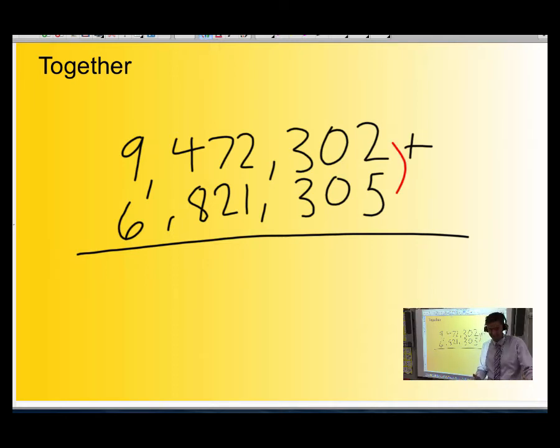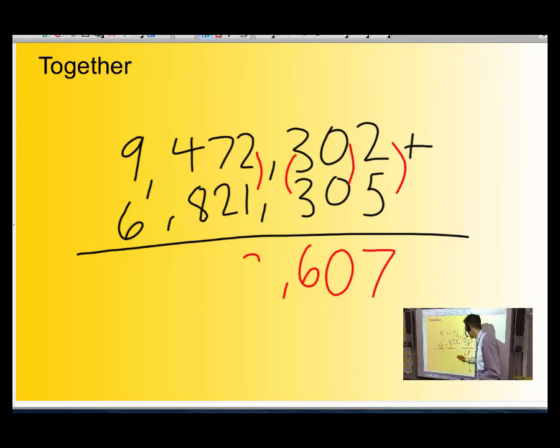2 and 5, what is it? Work it out. Okay, it's 7. 0 and 0, what is it? 0. 3 and 3, work it out. Pause me if you need. It's 6. Okay, we've written down three numbers, so let's do a comma. 2 and 1 is 3. Good. 7 and 2 is 9. Good.